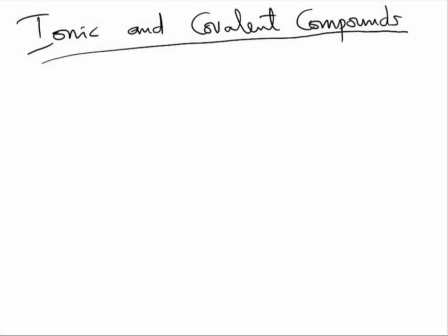There are two types of compounds at this level of chemistry: those that are called ionic compounds and those that are called covalent compounds. We need to learn about each of them, how they are made, and how to name ionic and covalent compounds.